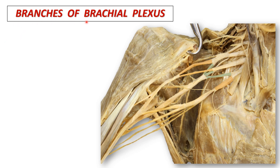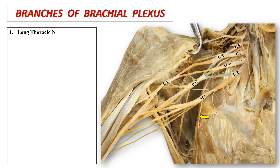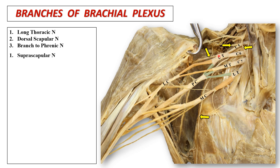Let's summarize the branches of the brachial plexus. Here are the roots, trunks, divisions, and cords of the brachial plexus. Branches arising from the roots are three in number: the long thoracic nerve, the dorsal scapular nerve, and a branch to the phrenic nerve. Branches from the upper trunk are two in number: the suprascapular nerve and the nerve to the subclavius muscle.